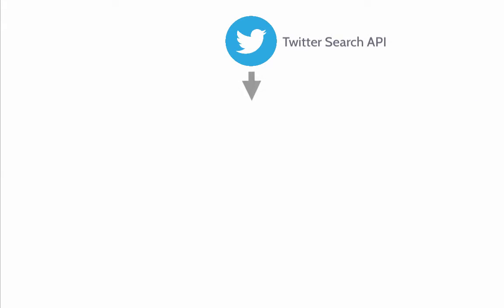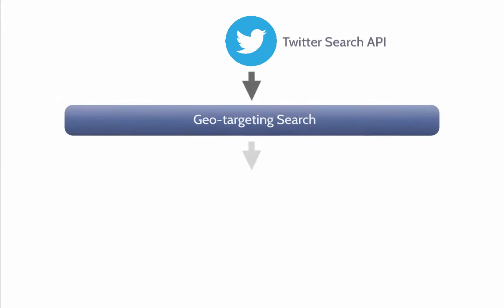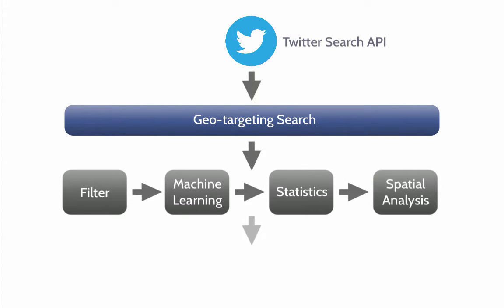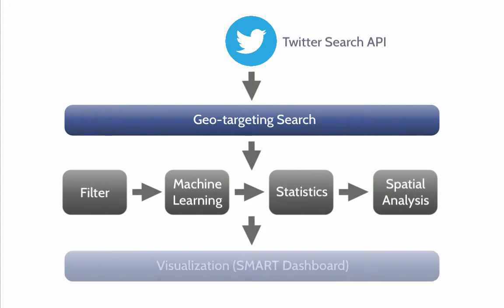There are multiple components to searching, processing, and visualizing social media messages from Twitter search APIs. The filtered statistics of the focus topics and geo-targeted cities are visually represented in the Smart Dashboard.